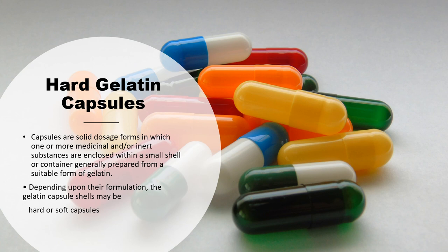Depending on the formulation, the gelatin capsule shells may be hard or soft capsules. You can see in the picture that these are the empty gelatin capsule shells. These gelatin shells are derived from the collagen of various animal and plant sources. These empty gelatin capsule shells are basically used for the preparation of gelatin capsules. The shell is comprised of two parts: the body and the cap. You fill your desirable material — composed of your active ingredient along with some excipients — into the body of the capsule, and you cap it so that you have a single unit dosage form.